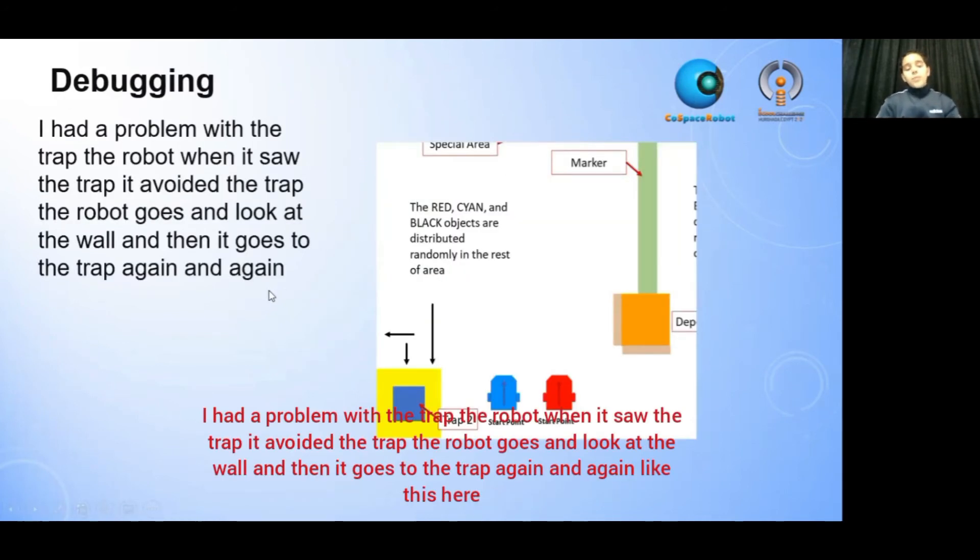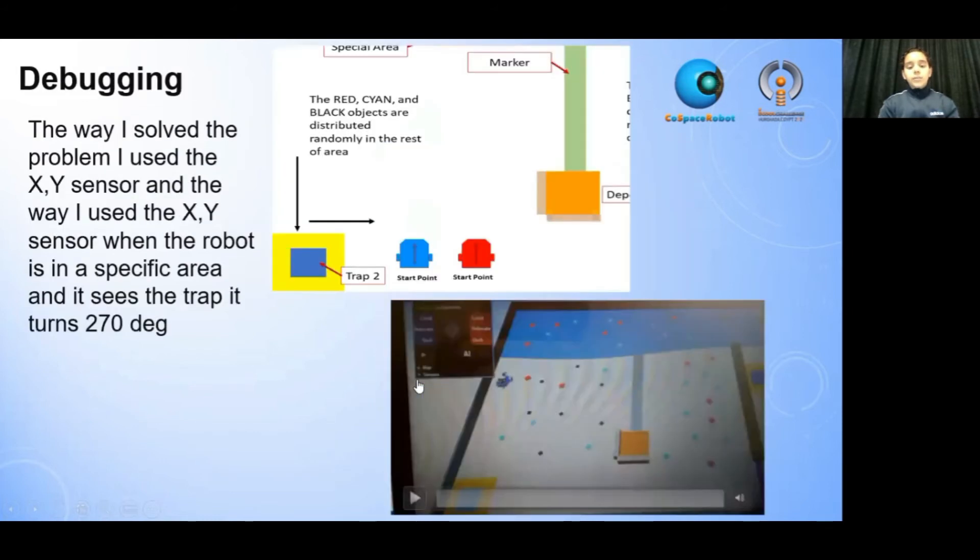I had a problem with the trap. The robot, when it saw the trap, it avoided the trap. And then it goes and looks to the wall and then goes to the trap again and again. It goes like this and then to the wall and then to the trap again and then to the wall again and then to the trap again.